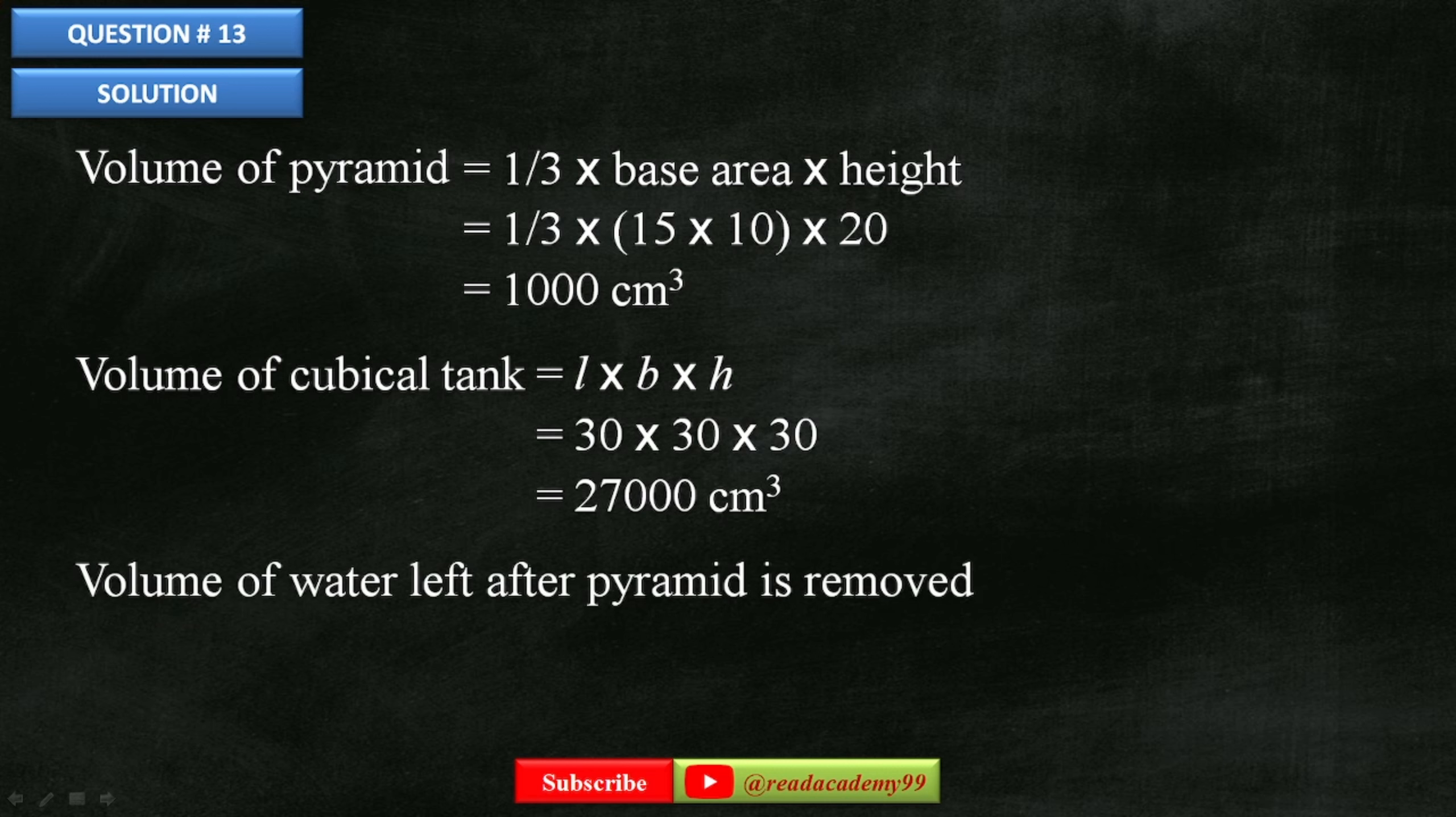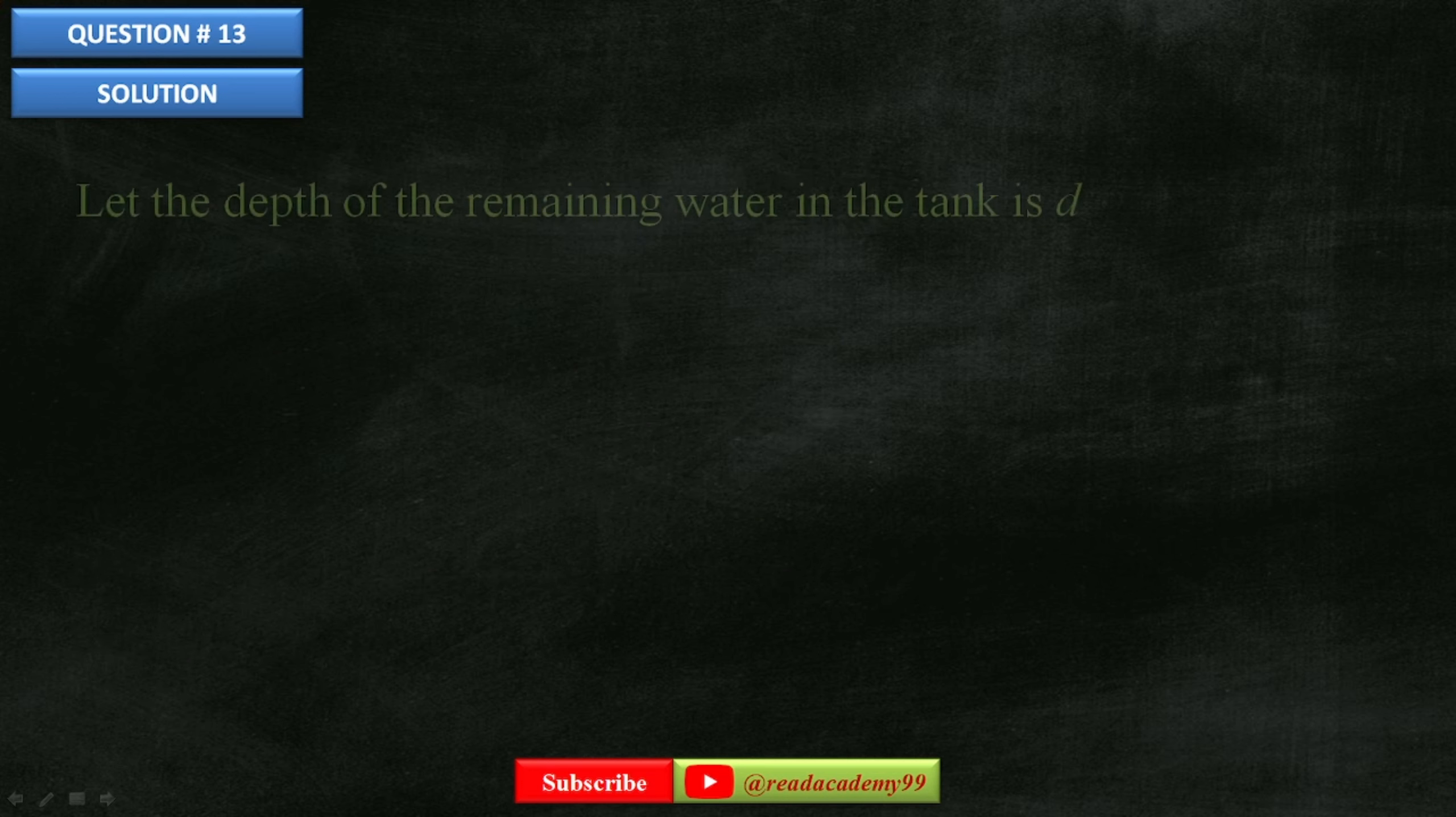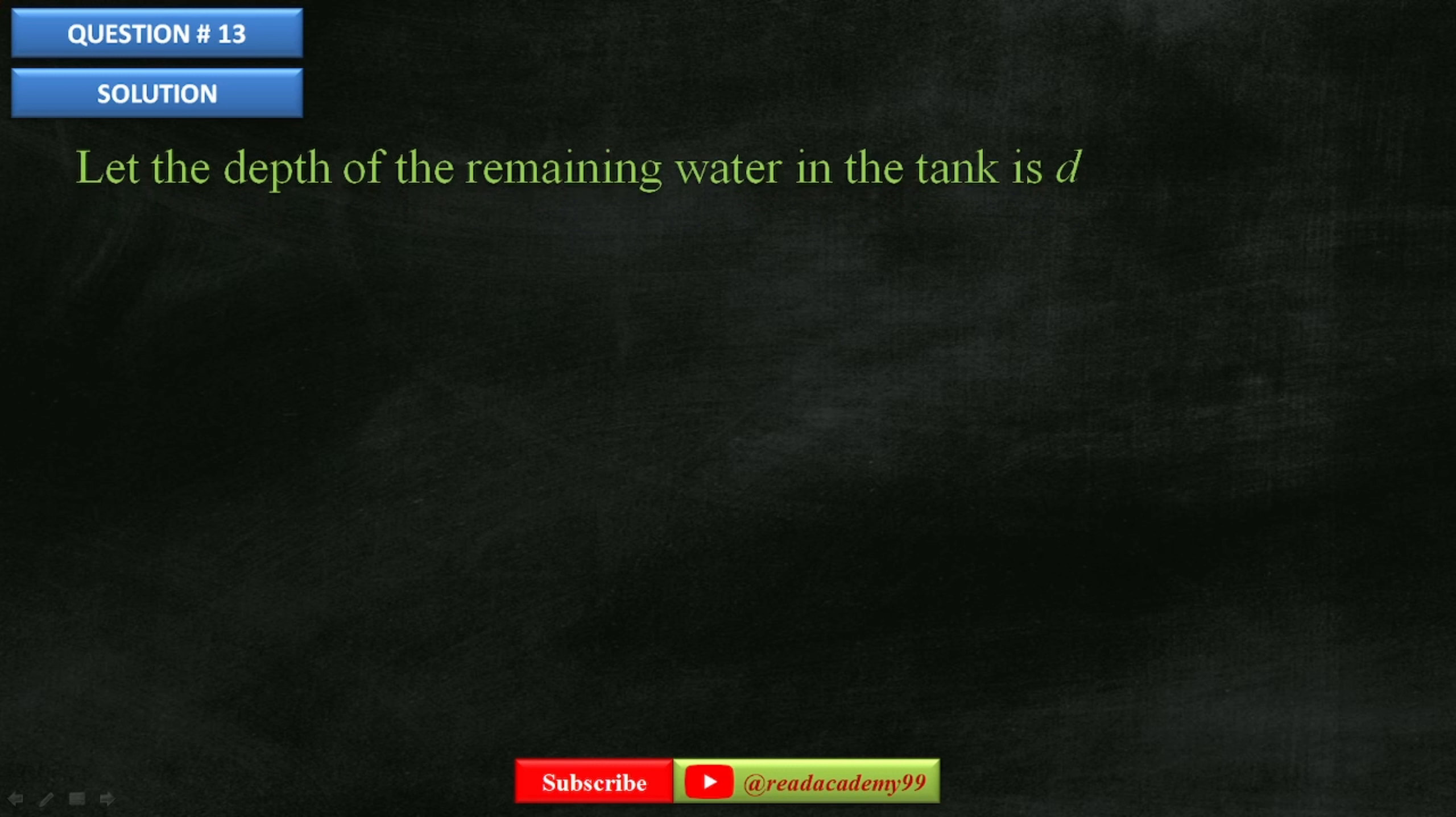Now the volume of water left after the pyramid is removed is going to be 27,000 minus 1,000, which is equal to 26,000 cm³. Let the depth of the remaining water in the tank be D.